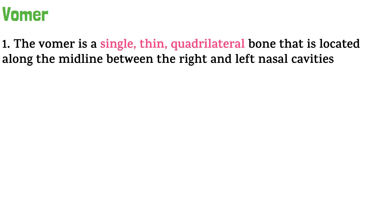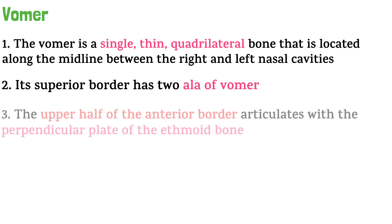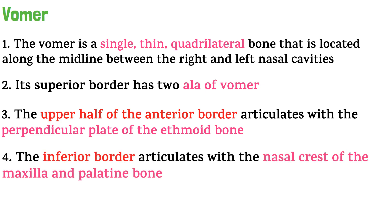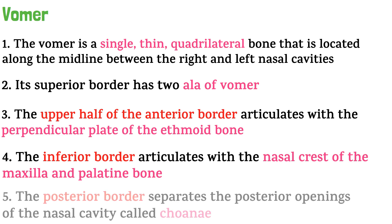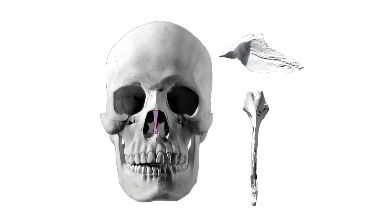The last bone is the vomer — a single thin quadrilateral bone located along the midline between the right and left nasal cavities. Its superior border has two ala of vomer. The upper half of the anterior border articulates with the perpendicular plate of the ethmoid bone. The inferior border articulates with the nasal crest of the maxilla and the palatine bone. The posterior border separates the posterior openings of the nasal cavity, called choanae.